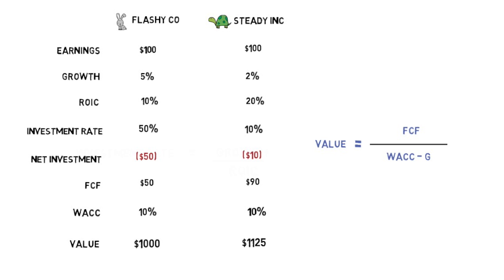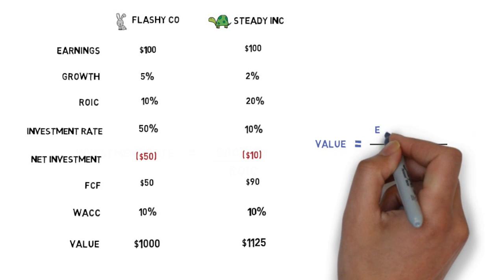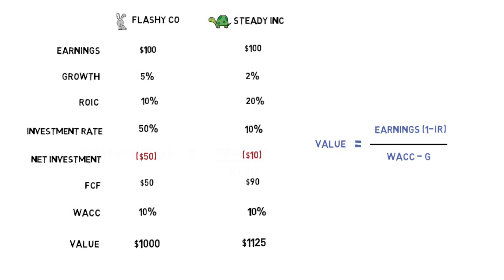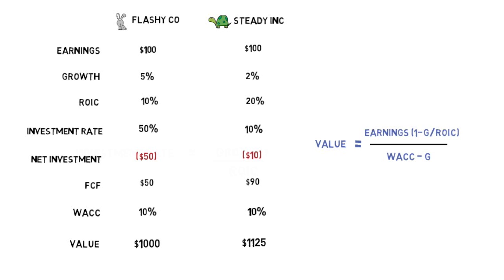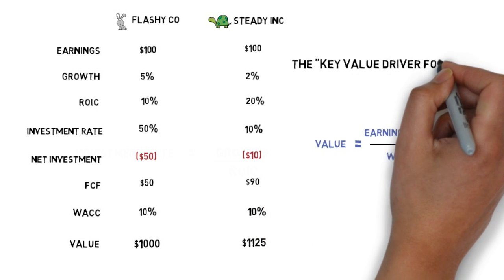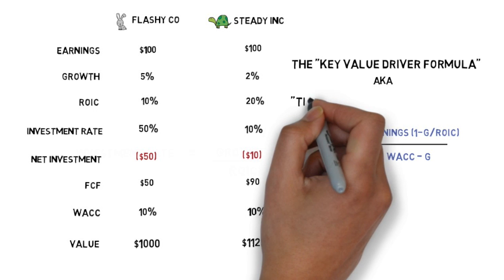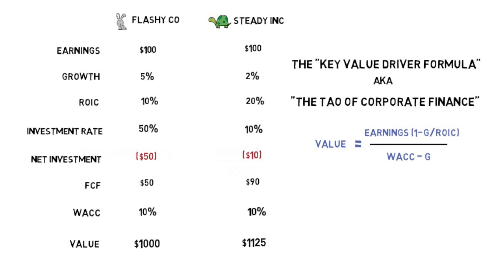We can further refine our equation by defining free cash flow in terms of earnings less the net investment required for growth — that is, earnings multiplied by (1 minus the investment rate). Going even further, by redefining the investment rate in terms of growth and ROIC, we value a company based on its earnings, its revenue growth, and its ROIC. This equation is called the key value driver formula, also known as the Tau of corporate finance, because it reduces valuation to just a few key components.